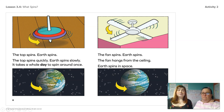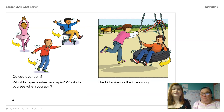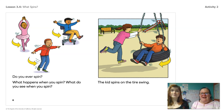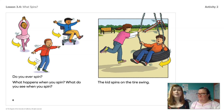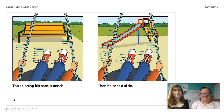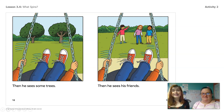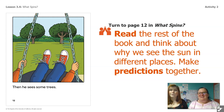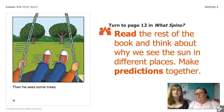The fan spins. Earth spins. The fan hangs from the ceiling; Earth spins in space. Do you ever spin? What happens when you spin? What do you see when you spin? The kid spins on the tire swing. The spinning kid sees a bench, then he sees a slide, then he sees some trees, then he sees his friends. Rosie and I are going to go ahead and read the rest of this book to you, and I want you guys to be thinking about your predictions about how this book is going to help us answer the question about why the sun looks like it's in different places.